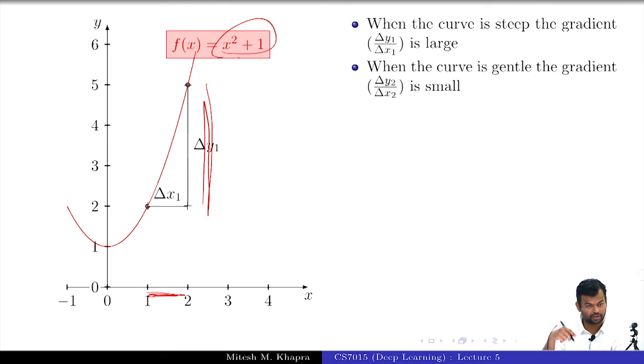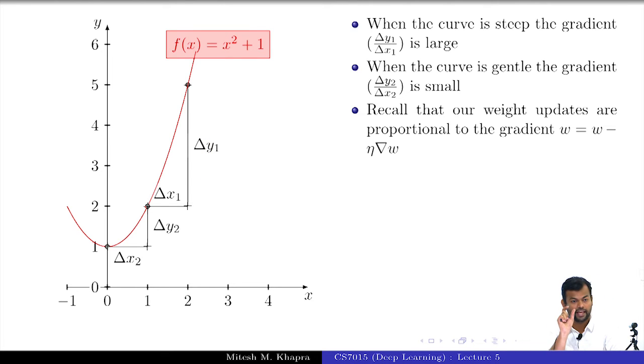Now let me do the same at a gentle portion of the curve. I will do it here. When I changed x by 1 unit again—the same change I did earlier—I changed from 0 to 1. How much did my y change? 1. Now what is this quantity, Δy₁ by Δx₁? It is the slope, the derivative at that point. So what are you inferring from this? What happens to the derivative when you are at steep slopes? The derivative is high because the change in y is much faster than the change in x. What happens to the derivative when you are at gentle slopes? Smaller, because the change in y is small or relatively smaller as compared to the change in x.